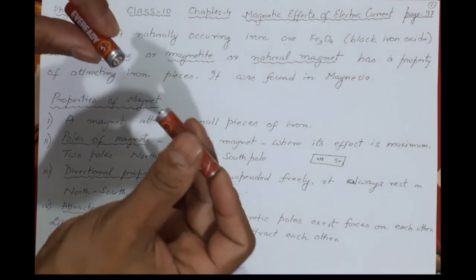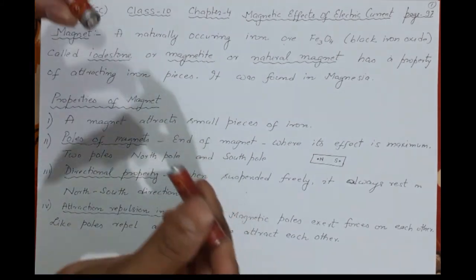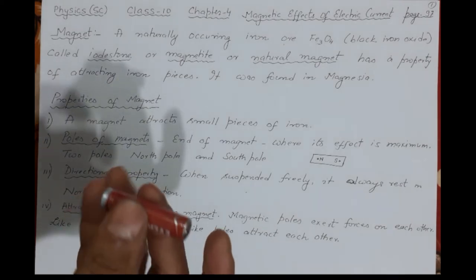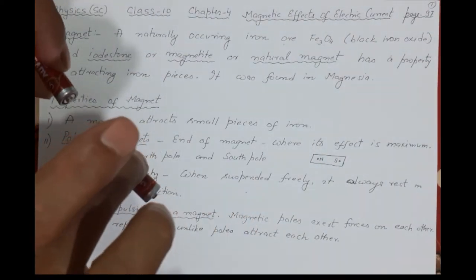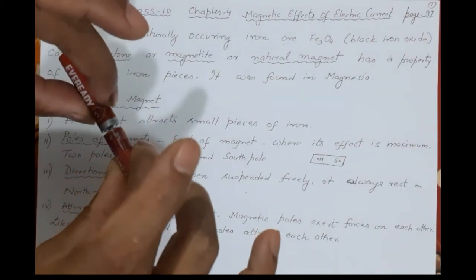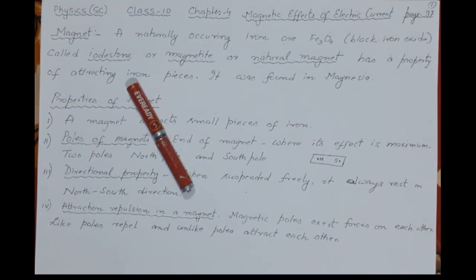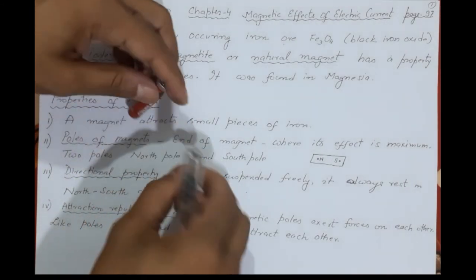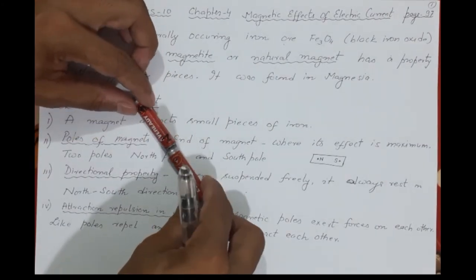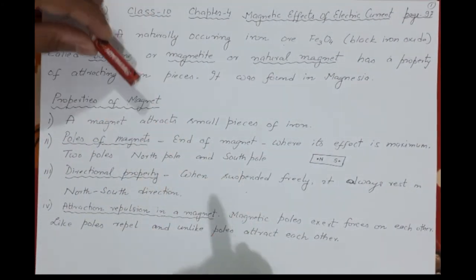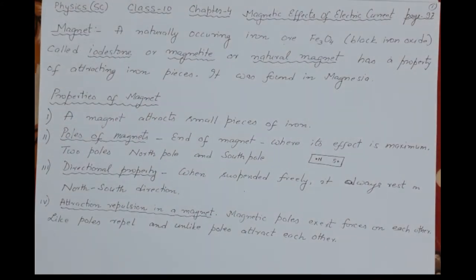If you bring two like poles close, they will repel and it will be difficult to make them touch. On the other hand, if you bring a north pole and a south pole together, they will easily attract and stick to each other. Unlike poles — north and south — attract, while like poles — north-north or south-south — repel.